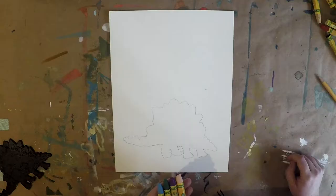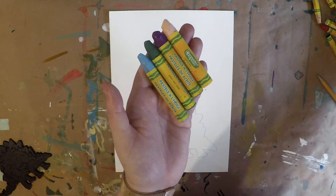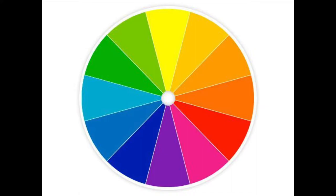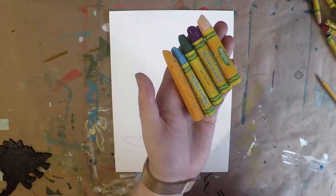Once you've picked out your favorite dinosaur, you need to start picking out your favorite colors. You really only want to choose about three to five colors, and you should choose colors that are next to each other on the rainbow. These colors next to each other are called analogous colors. You could also choose one extra special color that's across from your favorite colors on the rainbow, so that it adds a little extra pop of excitement.